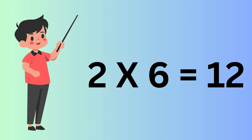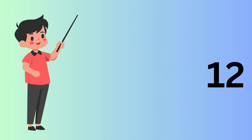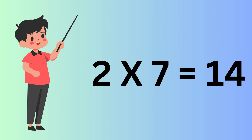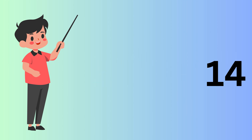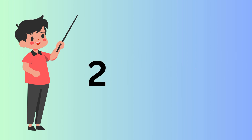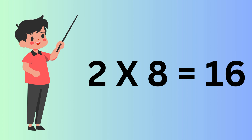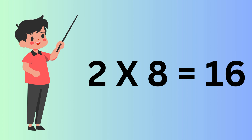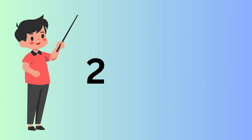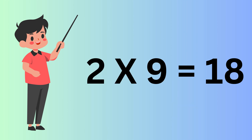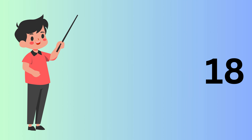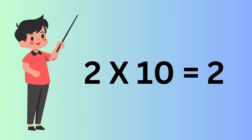Two Sixes are Twelve. Two Sevens are Fourteen. Two Eights are Sixteen. Two Nines are Eighteen. Two Tens are Twenty.